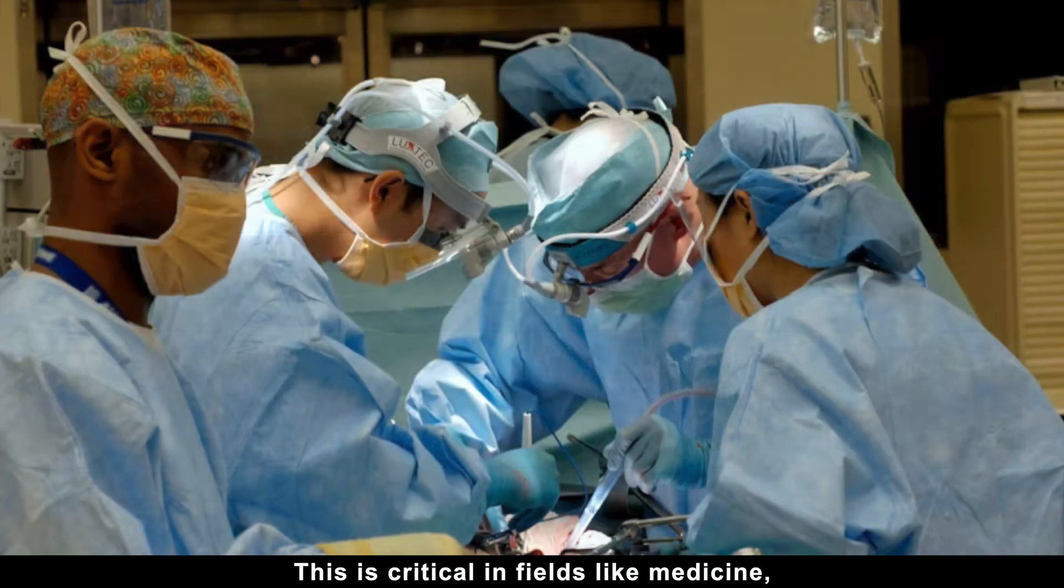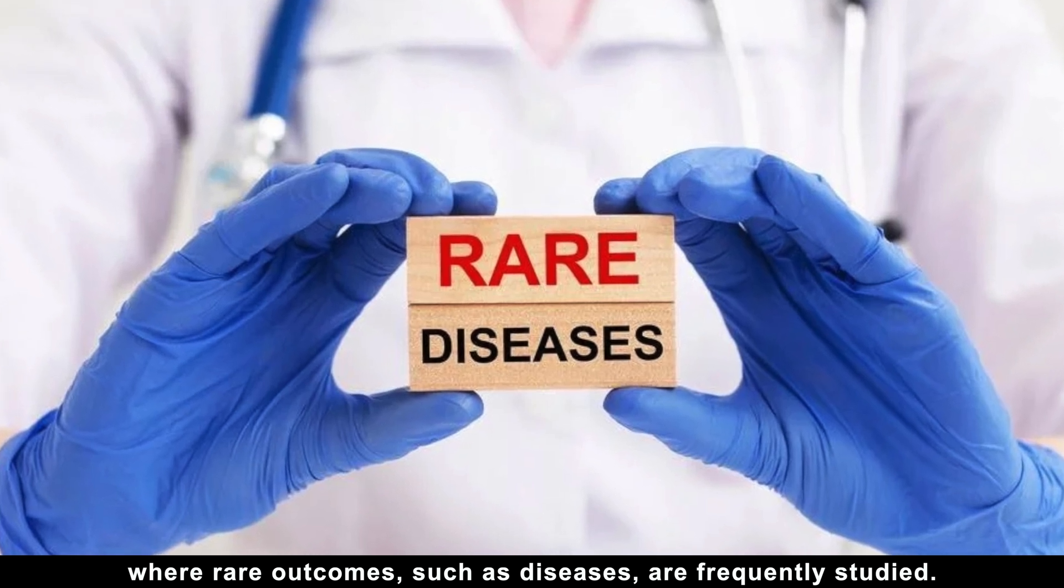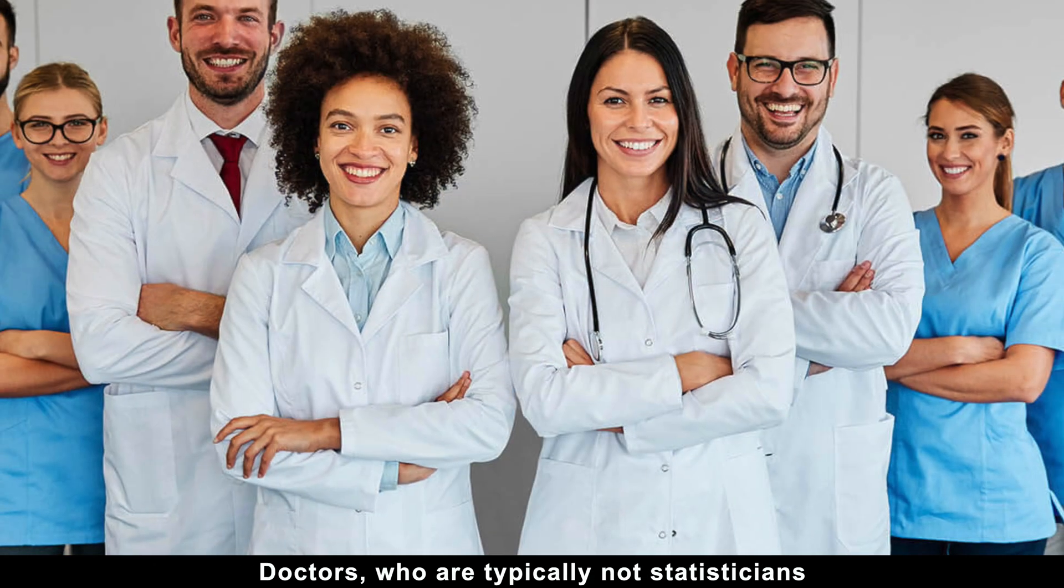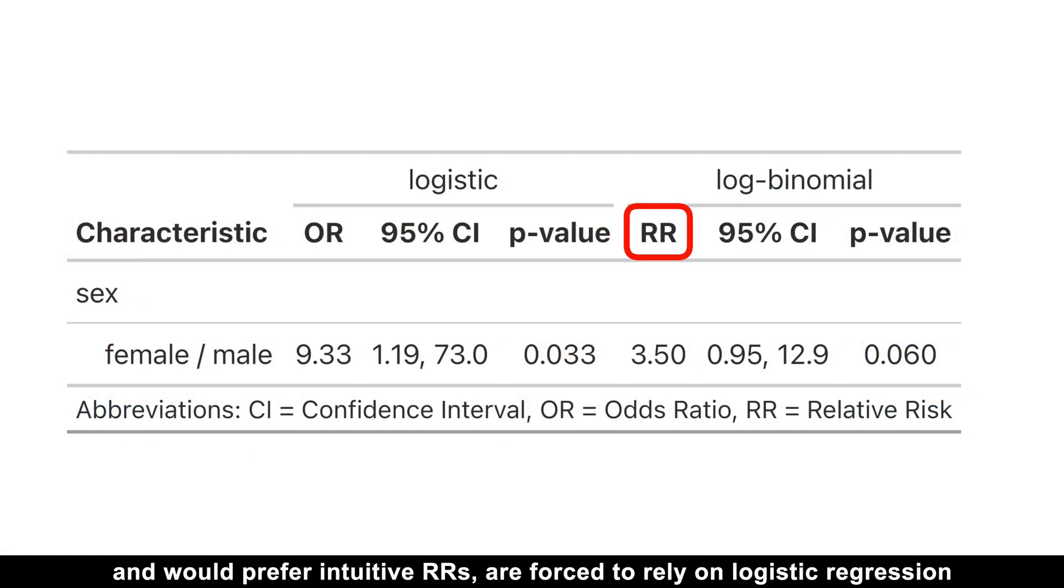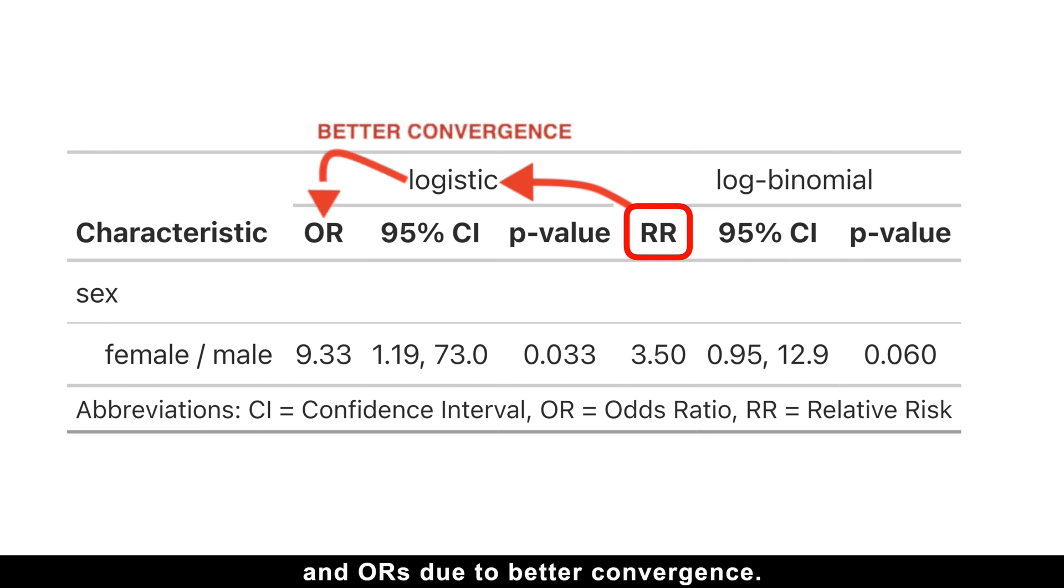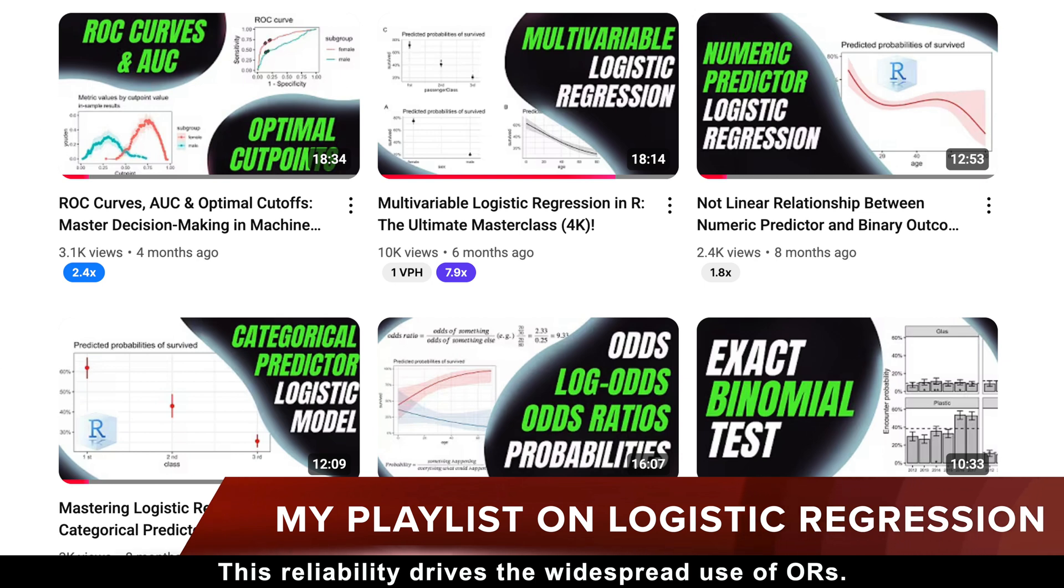This is critical in fields like medicine, where rare outcomes, such as diseases, are frequently studied. Doctors, who are typically not statisticians and would prefer intuitive risk ratios, are forced to rely on logistic regression, and odds ratios due to better convergence. This reliability drives the widespread use of odds ratios.